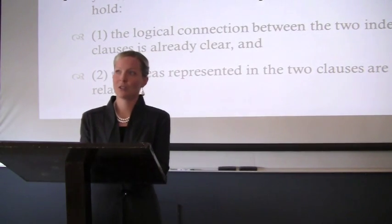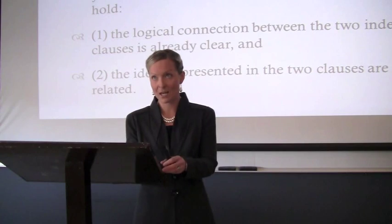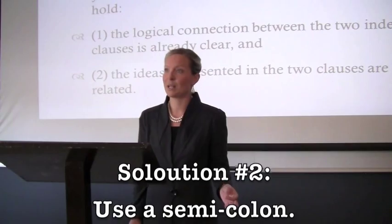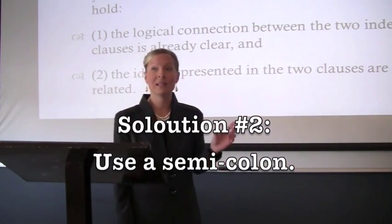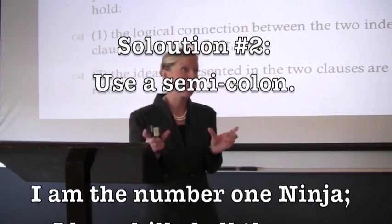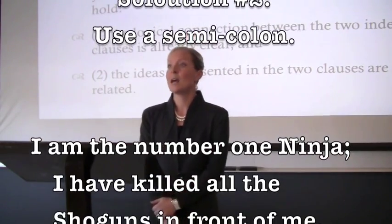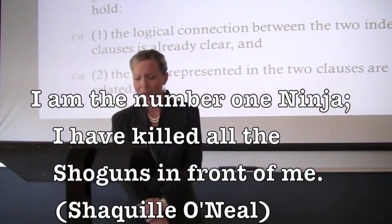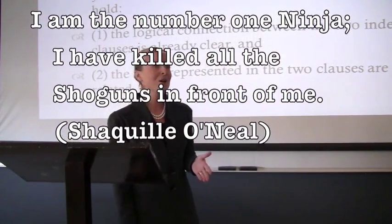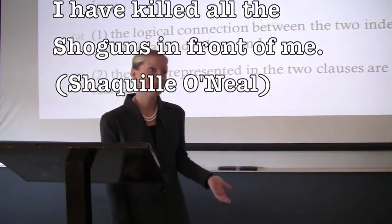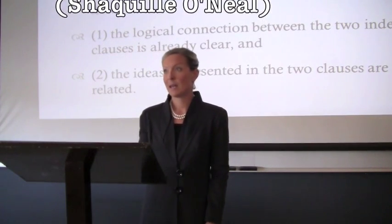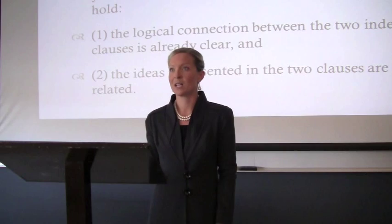The second solution for a comma splice is to use a semicolon. A semicolon is a stylistically savvy punctuation point — it suggests that there is a relationship between these two independent clauses, that they're related in some thematic or profound way. So instead of a period, you put in a semicolon: 'I am the number one ninja; I have killed all the shoguns in front of me.' You're suggesting a relationship between being a number one ninja and killing all the shoguns. At the end of this class, can somebody explain what a shogun is?